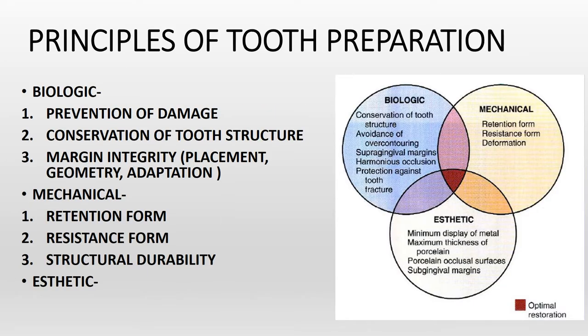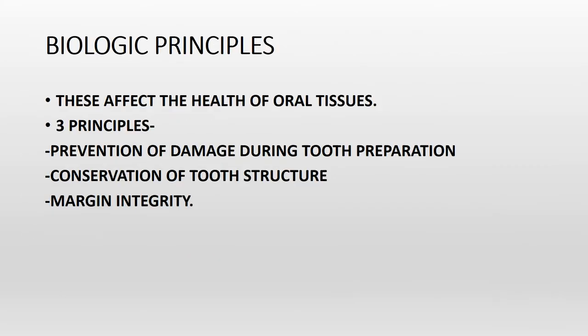There are three main principles of tooth preparation: biological, mechanical, and aesthetic. Biological is the one which affects the health of the oral tissue. Mechanical affects the integrity and durability of the restoration. Aesthetic affects the appearance of the patient. Starting with the first — the biologic principle — this affects the health of the oral tissue.